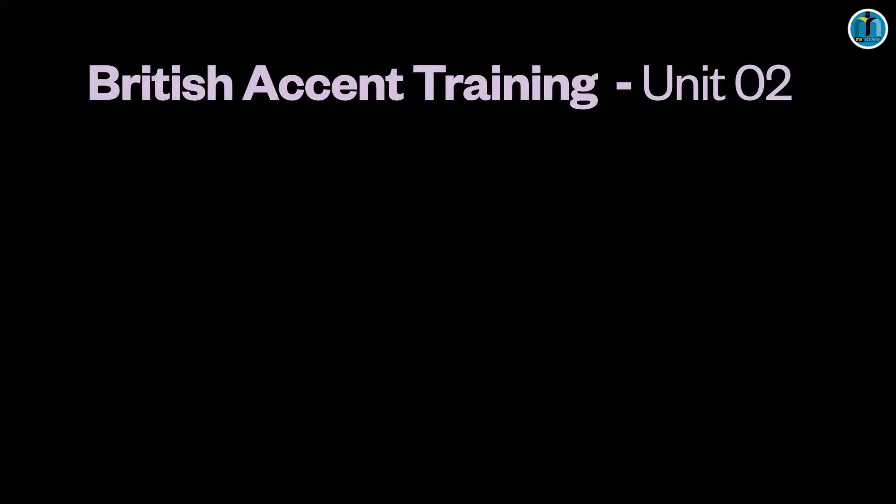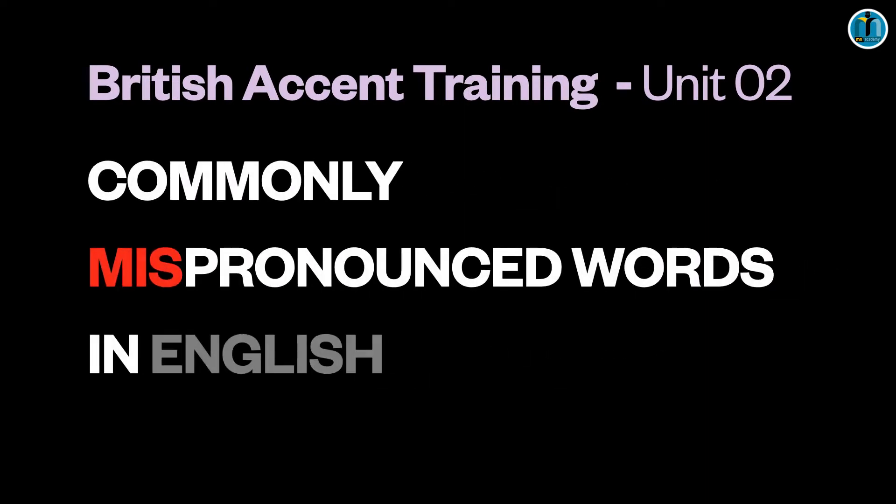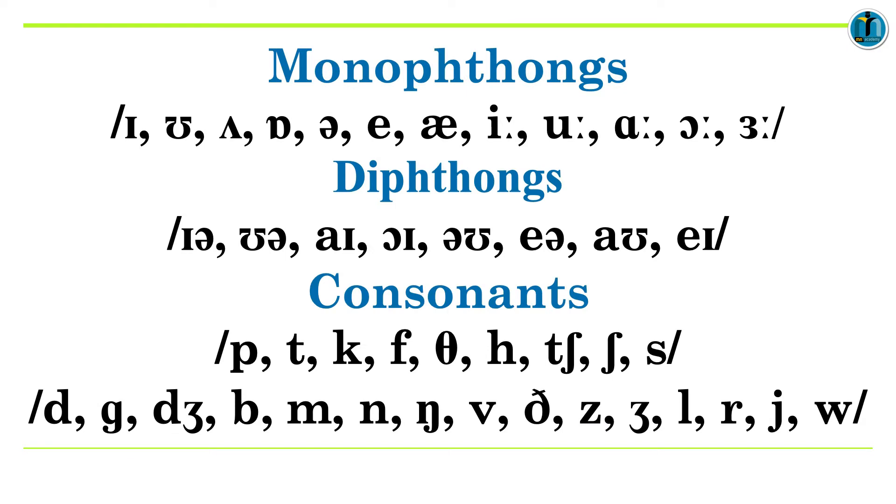Today we have another ten words that are commonly mispronounced. As I said in the first episode, we'll be doing this with the help of the IPA symbols. In case you don't know the sounds represented by these symbols, I have given a link in the description below where you can download a PDF of English phonemes and another link of an explanatory video that I've already done on the 44 sounds of English.